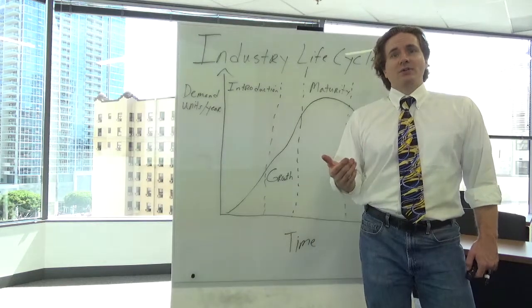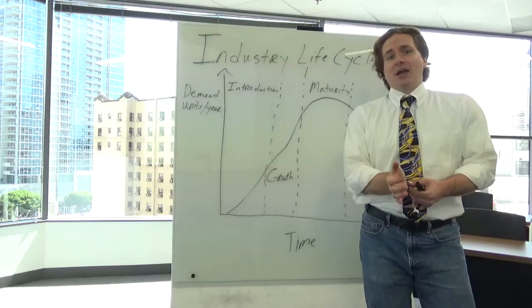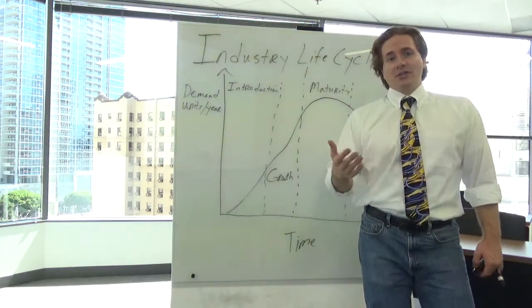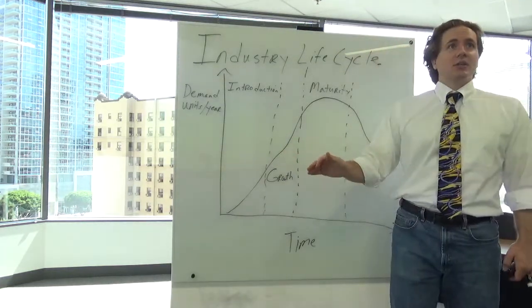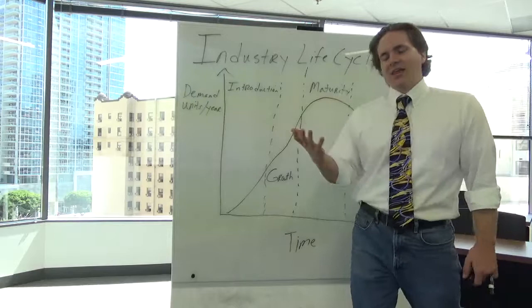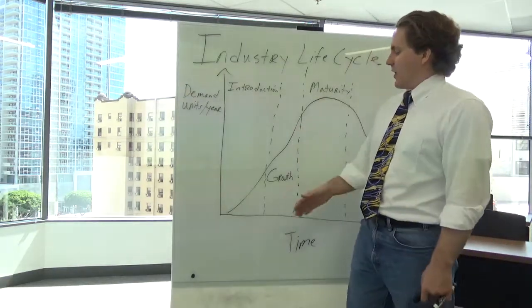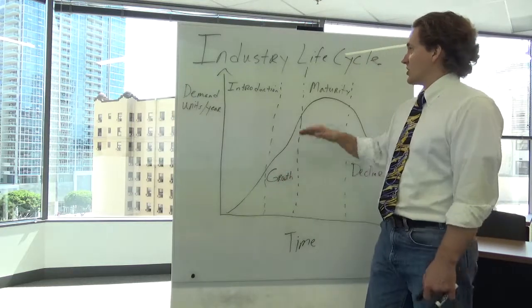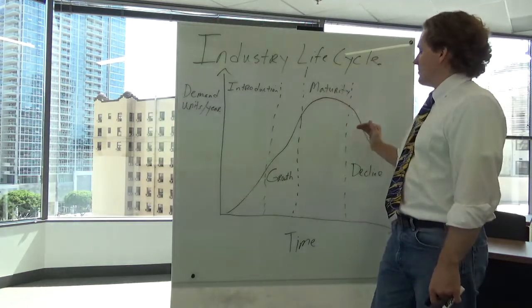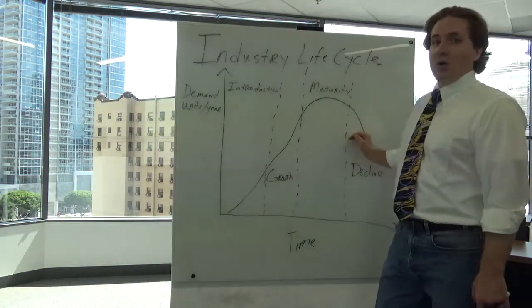And of course, some industries, I think video games are also another good example because they are technological, will wind up continuously having life cycle generation. And I think about when I was a kid, right? You had the Sega Master System, which went to introduction, growth, maturity, and decline. But as the Sega Master System was going into decline, they were already introducing the Sega Genesis.